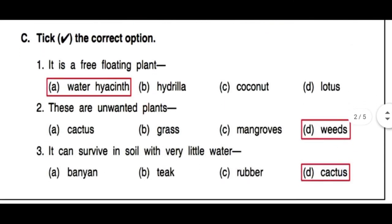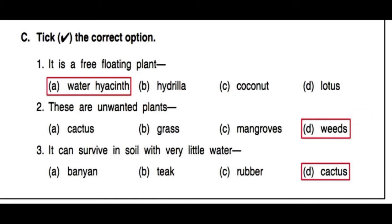Now let us tick the correct option. First: it is a free-floating plant — the answer is water hyacinth. Second: these are unwanted plants — weeds are unwanted plants. Third: it can survive in soil with very little water — the answer is cactus.